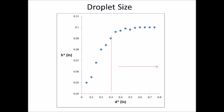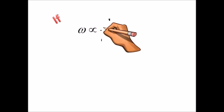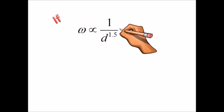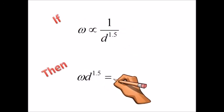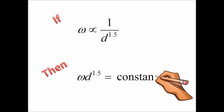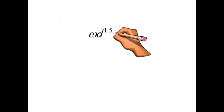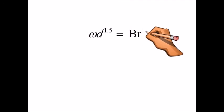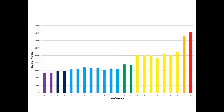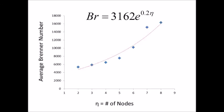The Rubenstein number is large enough for our setup that inertial forces dominate over surface tension. Based on this analysis, the product of frequency of oscillation and drop diameter raised to the 3/2 power is constant. We define this to be the Brenner number. Our results show that the Brenner number is related to the mode shape, or the number of nodes in the droplet — the relationship is exponential. Thus, we see how oscillation frequency, drop size, and mode shape are all related.